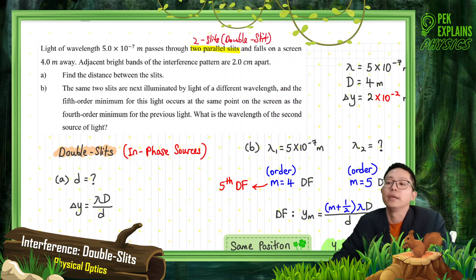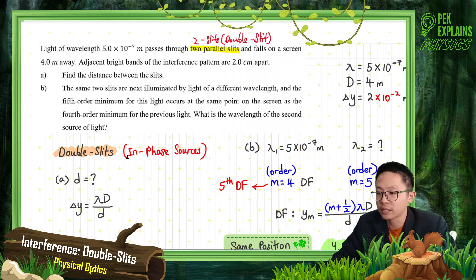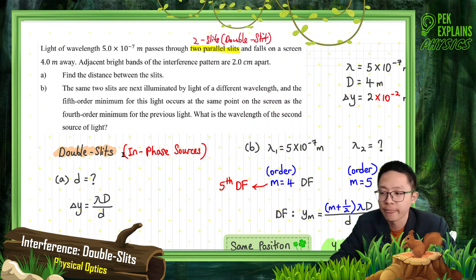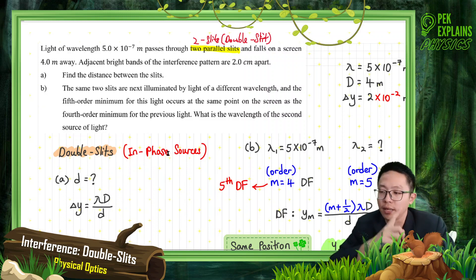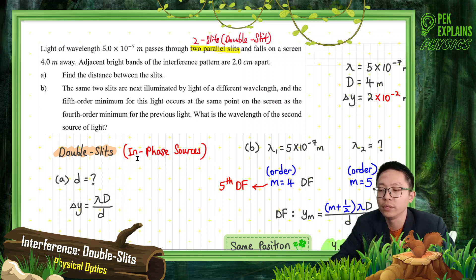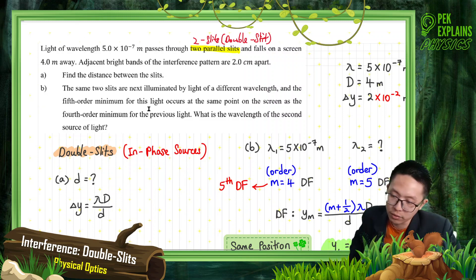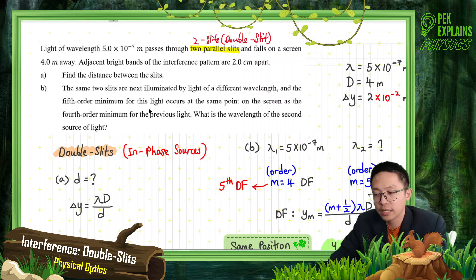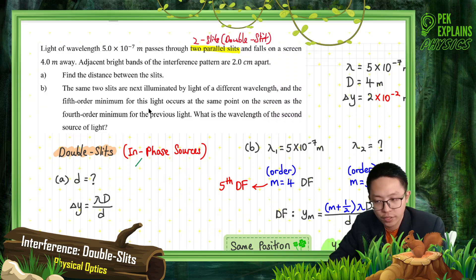Double slit — is it about in-phase or anti-phase? Double slit is about in-phase. This is the first thing you must know: double slit uses in-phase only. If in-phase, how do you know the formula? For in-phase sources, bright fringe is ΔL = Mλ, and for dark fringe, ΔL = (M + ½)λ.